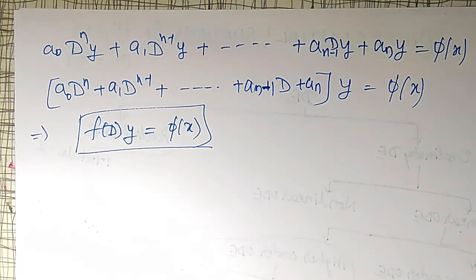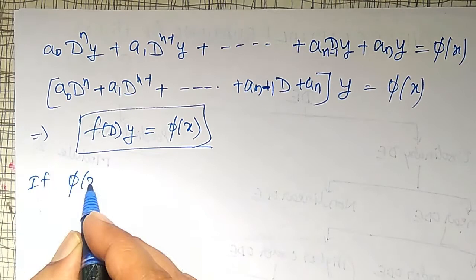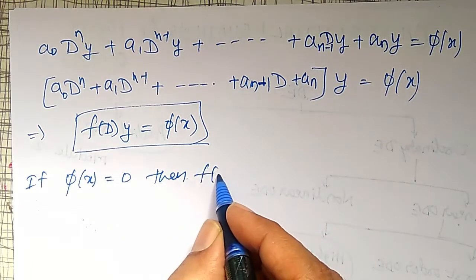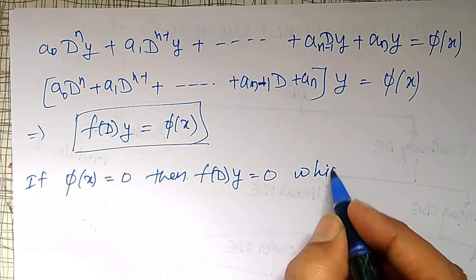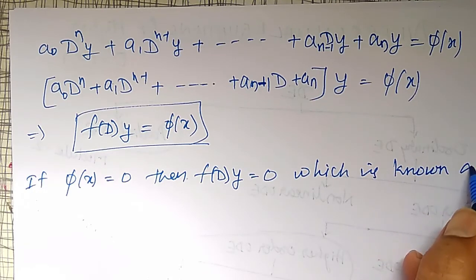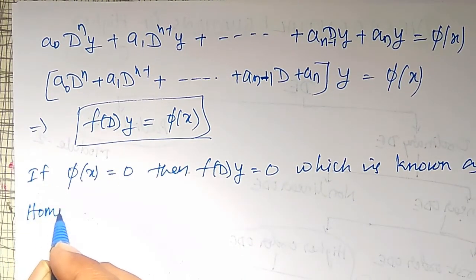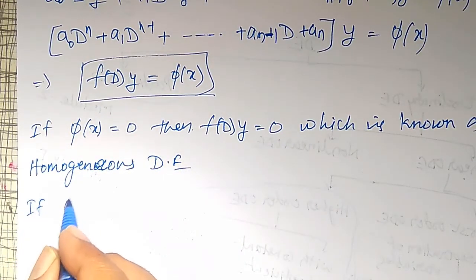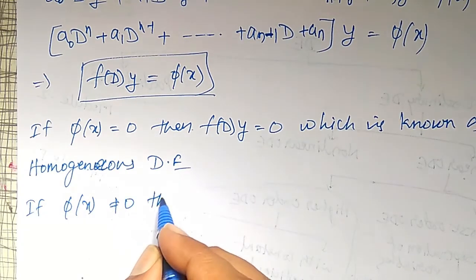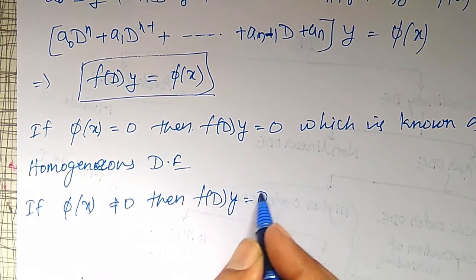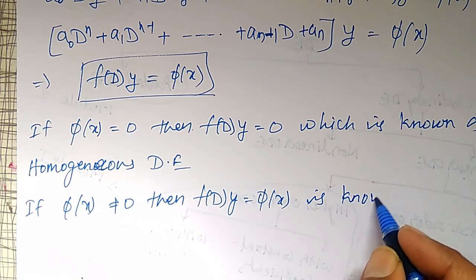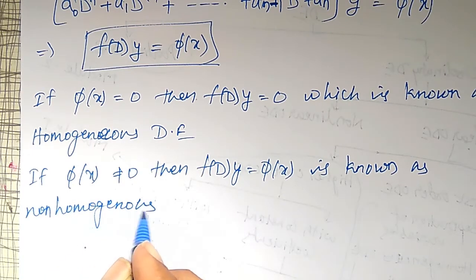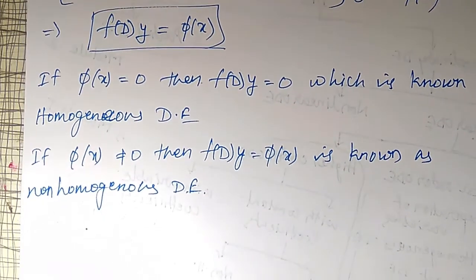This differential equation F(D)y = φ(x) is said to be homogeneous if φ(x) equals zero, giving F(D)y = 0, which is known as a homogeneous differential equation. And if φ(x) is not equal to zero, then F(D)y = φ(x) is known as a non-homogeneous differential equation, with constant coefficients.